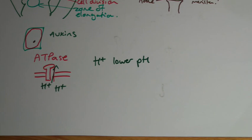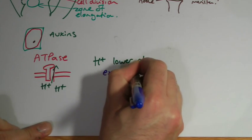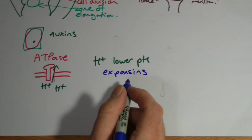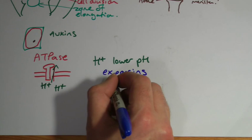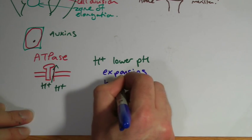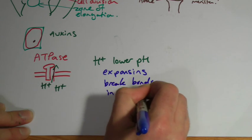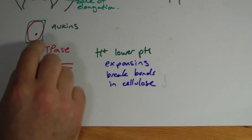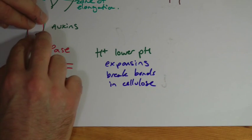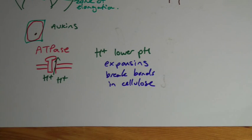And it makes it more suitable for something called expansins, which is another enzyme. And what expansins do is they break the bonds in the cellulose. Cellulose has got a lot of bonds. Remember it from the first unit. And once they've been broken, this is a lot weaker. So the cell as it grows will elongate because the cell wall has simply become weaker.